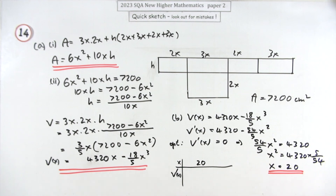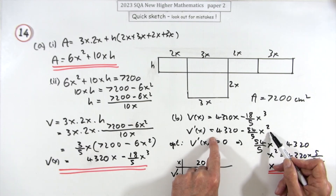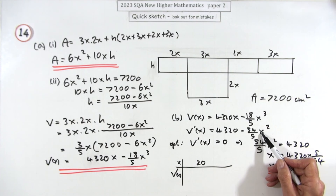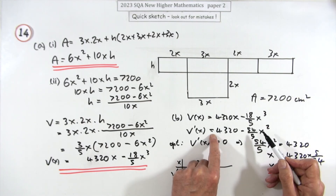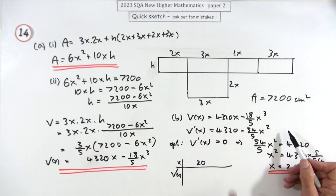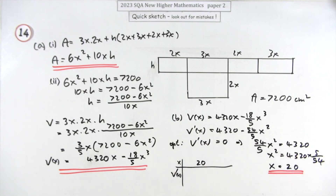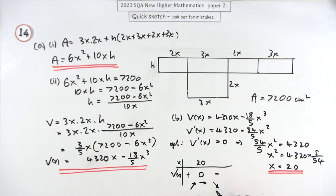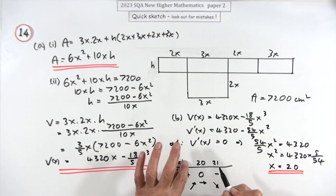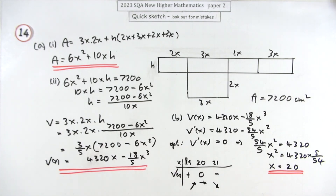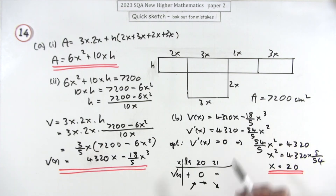We can reason about the sign directly: V'(x) = 432 − (54/5)x² equals zero at x = 20. Substituting anything larger makes (54/5)x² bigger than 432, so V' goes negative. Substituting anything smaller, V' stays positive. So the sign goes positive → zero → negative, confirming a maximum volume at x = 20 centimeters.